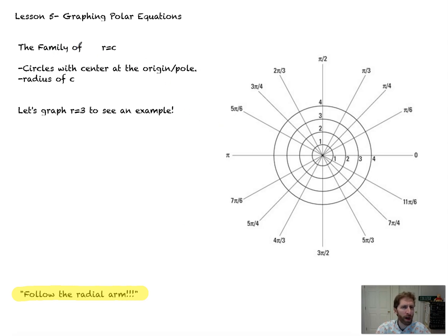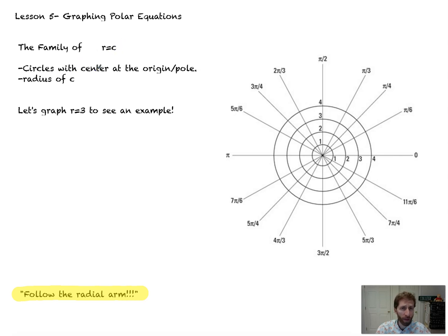First we're going to start out with the family of r equals c, where c is some constant. So that could be r equals 5, r equals 3, r equals negative 2 — it could be any constant. Circles with the center at the origin, or the pole, is the best way to describe this. You're going to have circles with a radius of c, whatever that is. Now r equals 3 would be an example.